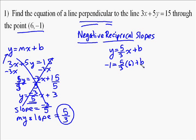You've got to multiply this out. 5 thirds times 6 over 1 is like 30 over 3, which is equivalent to 10. So you end up with negative 1 equals 10 plus b. Subtract 10 from both sides, and you get b equals negative 11.